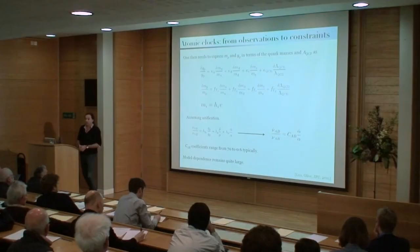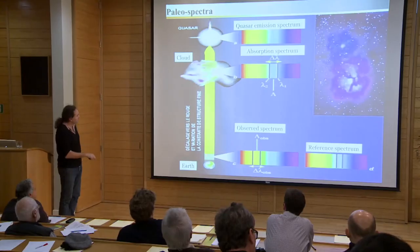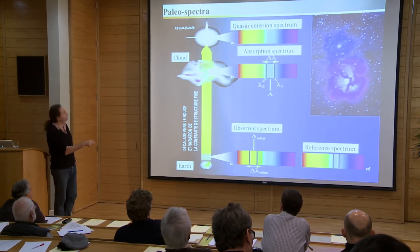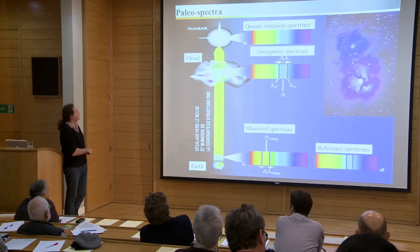Now for quasars — the quasar itself is just a bright source. What matters is that light from this very bright distant object propagates through the universe, passing through clouds of atoms. At specific frequencies the light excites atoms in the cloud; these atoms de-excite isotropically, so the observer sees an absorption spectrum. Studying this absorption spectrum tells us about the chemical composition of the interstellar or intergalactic medium — this is the usual use of such spectra in astrophysics.